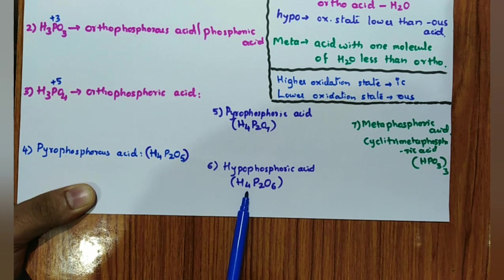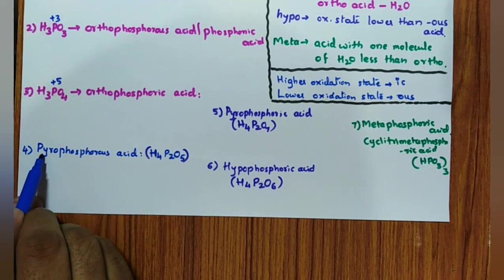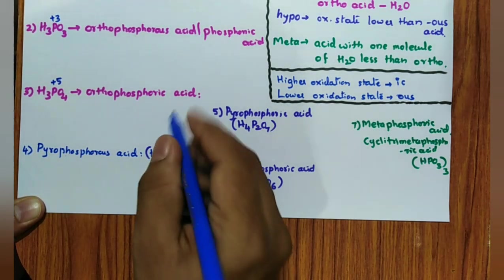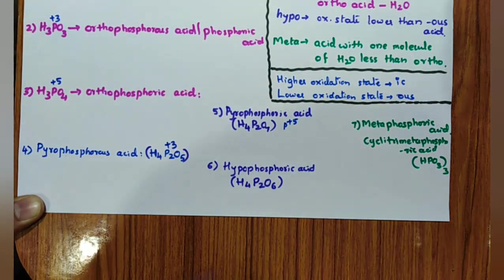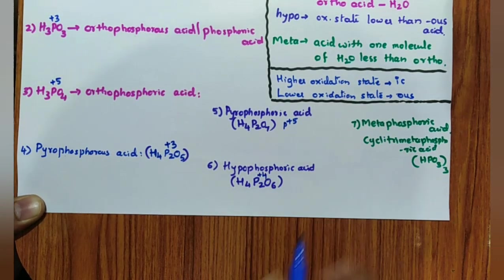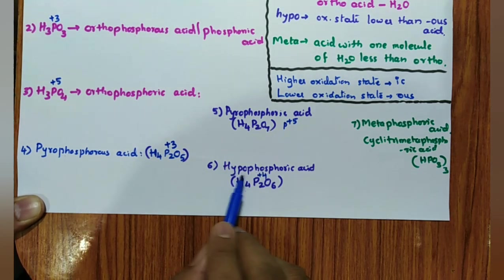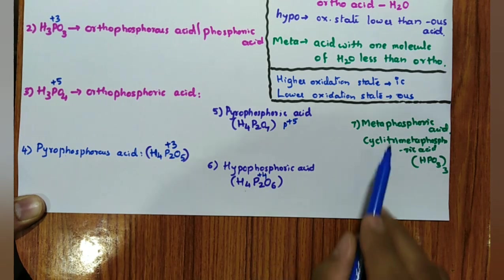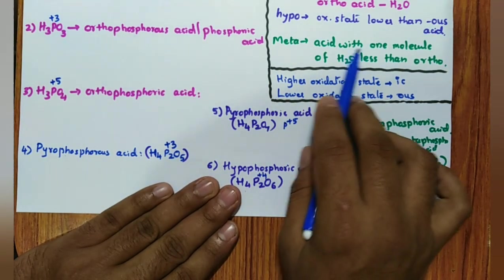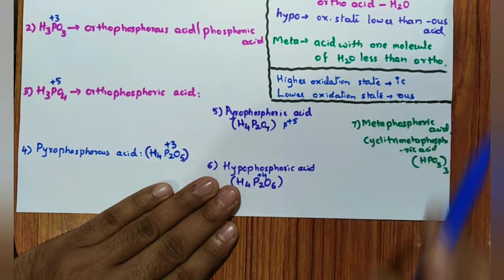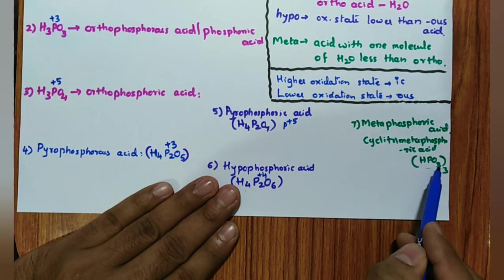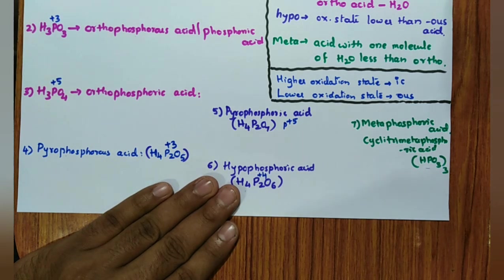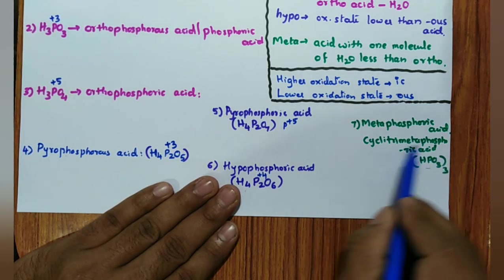Hypophosphoric acid has phosphorus in +4 oxidation state — one oxidation state less than the IC acid (+5), hence it is hypo. Then metaphosphoric acid: meta means one molecule of water less than the ortho. Ortho is H₃PO₄; subtract water and you get HPO₃. A polymeric form is possible, so I have taken cyclic trimetaphosphoric acid.